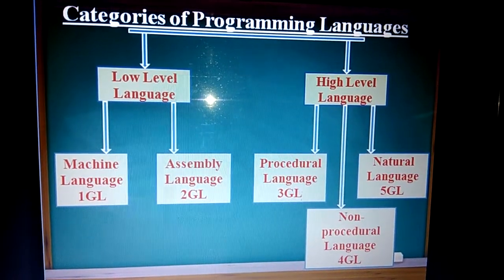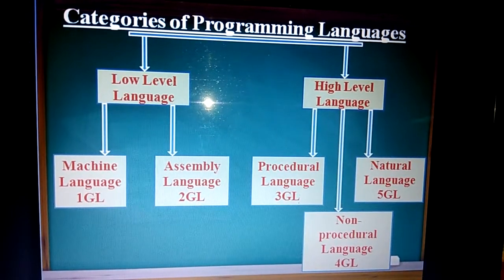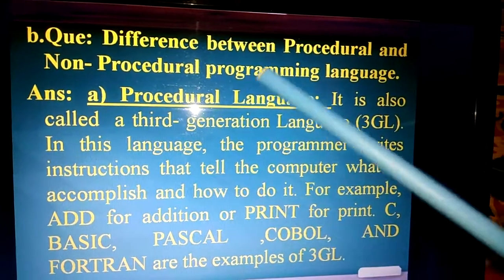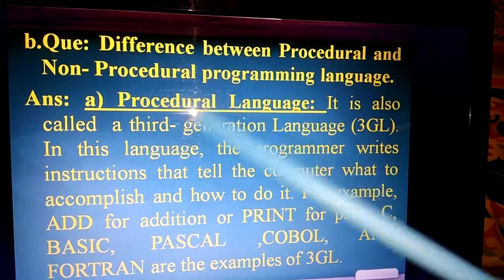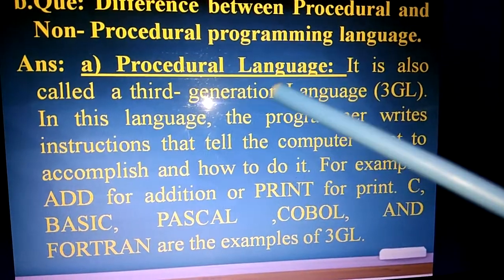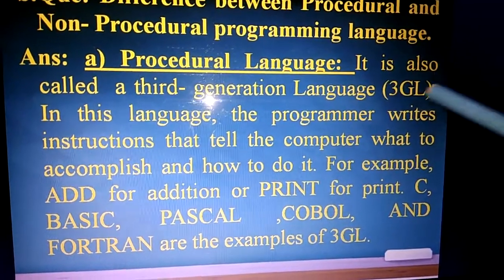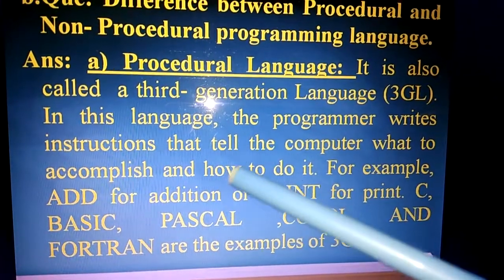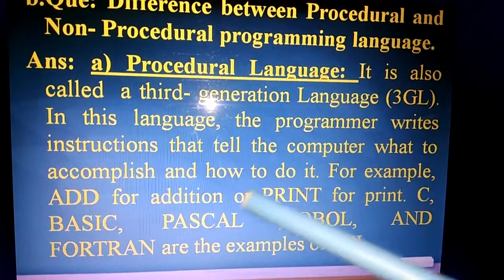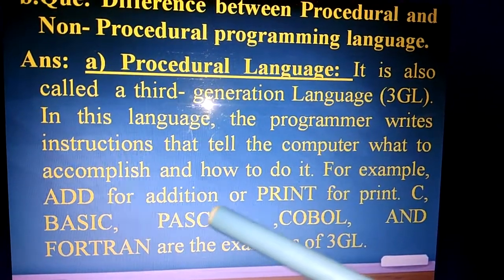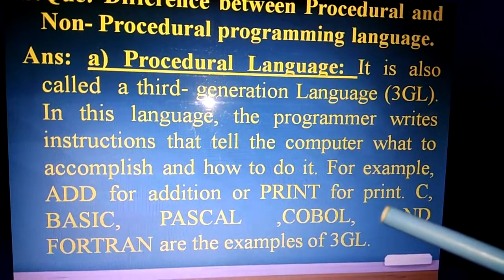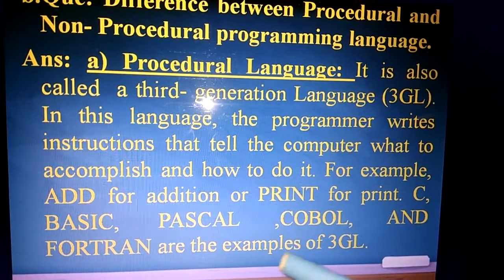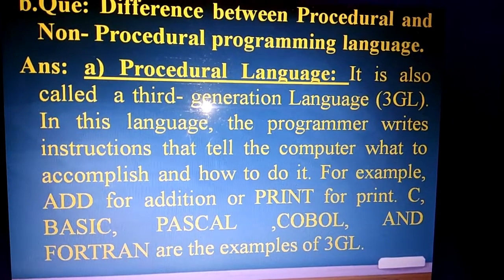Now the big question: the difference between procedural and non-procedural programming language. Procedural language is also called third generation language (3GL). In this language, the programmer writes instructions that tell the computer what to accomplish and how to do it. For example, ADD for addition, PRINT for print. BASIC, Pascal, COBOL, and FORTRAN are examples of procedural language.